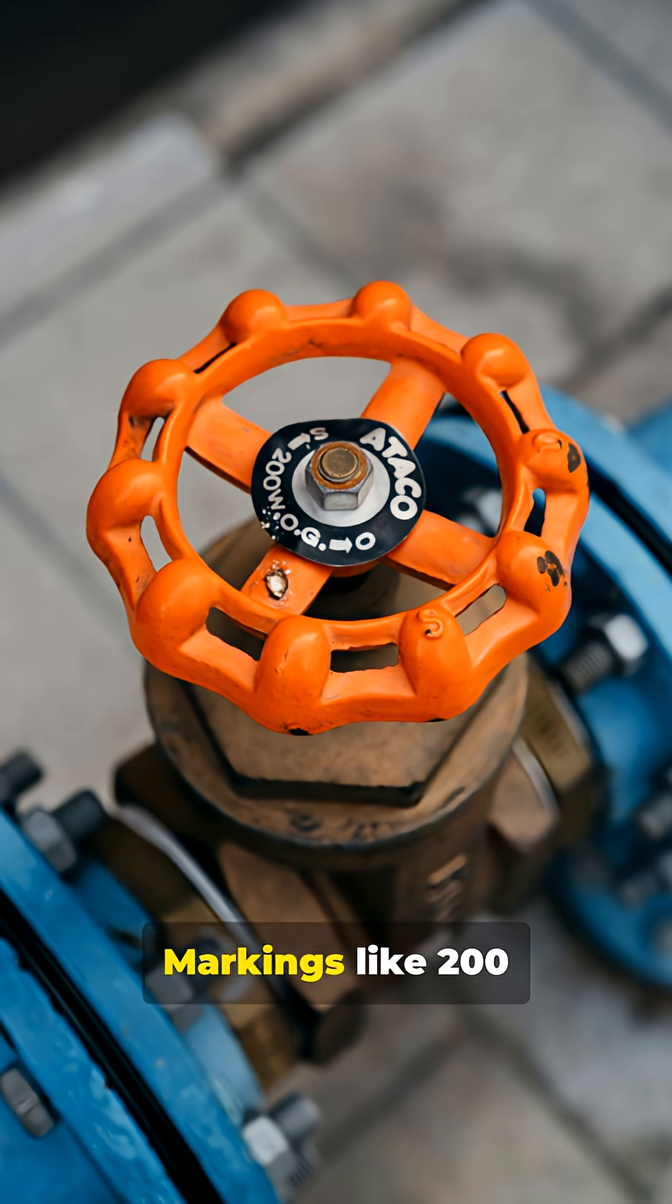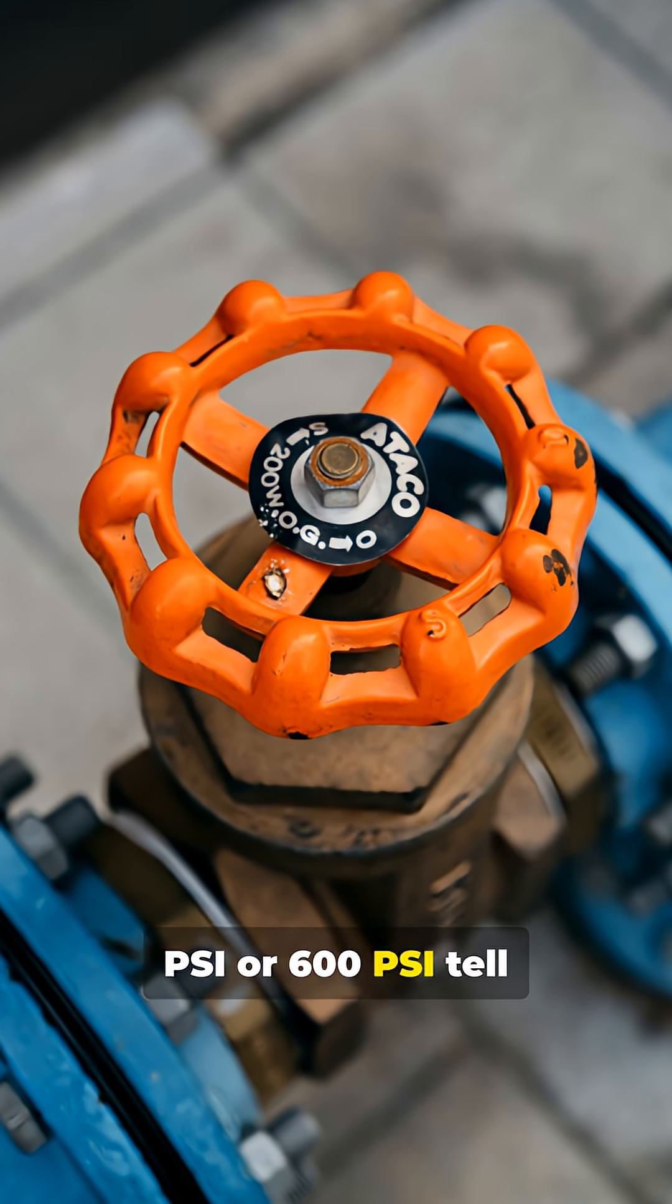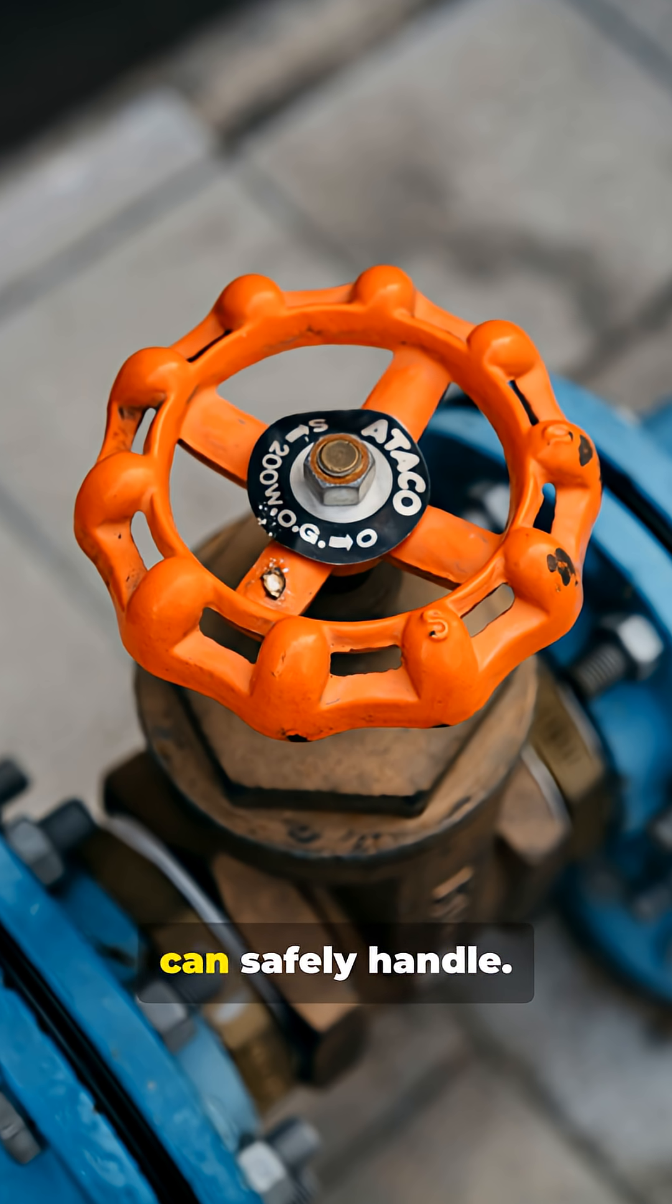Pressure rating. Markings like 200 PSI or 600 PSI tell you the maximum pressure the pipe can safely handle.